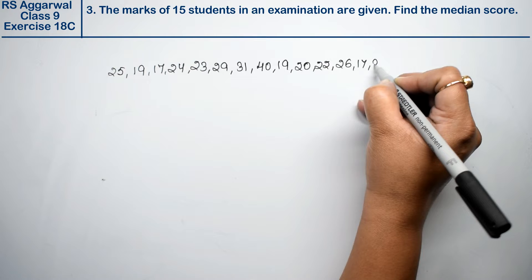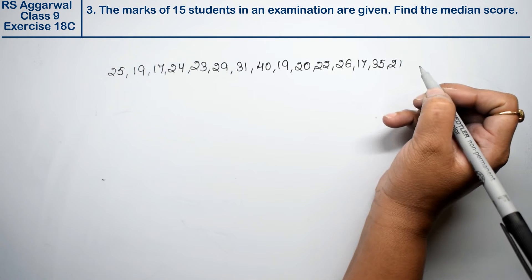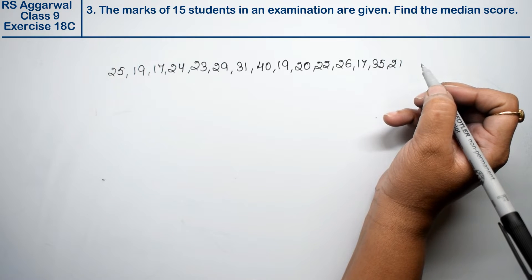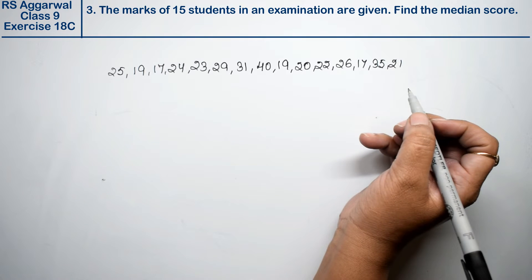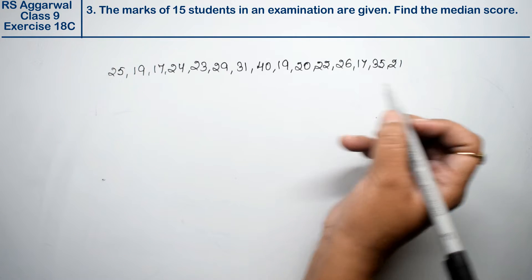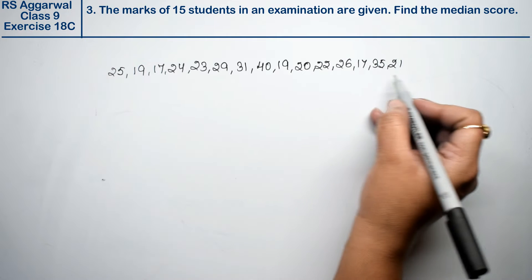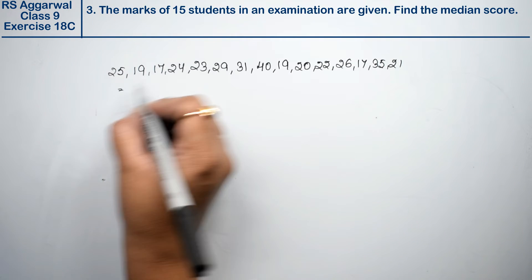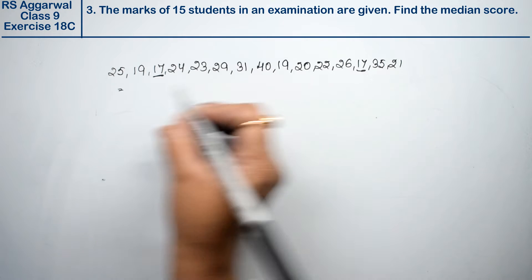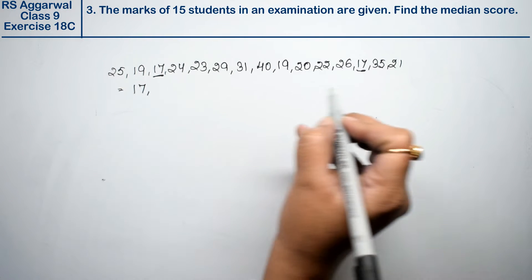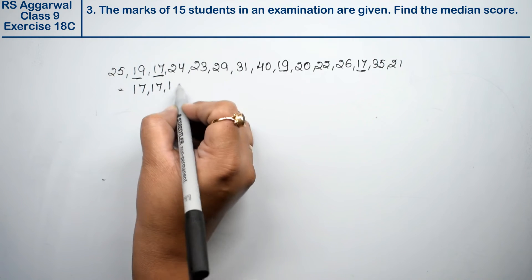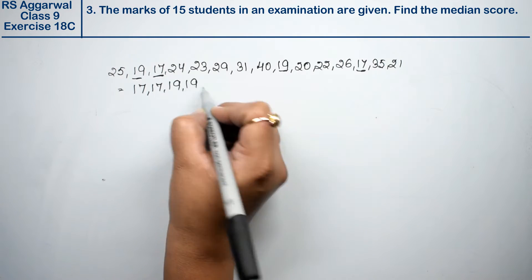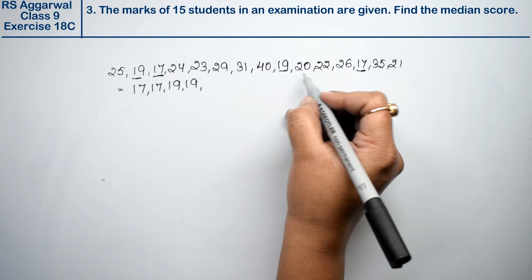Find the median score. So how do we find the median? First, we arrange in ascending order. The smallest number is 17, so two times 17. Then we don't have 18. Then 19 appears two times, so 19 and 19, after that 20.